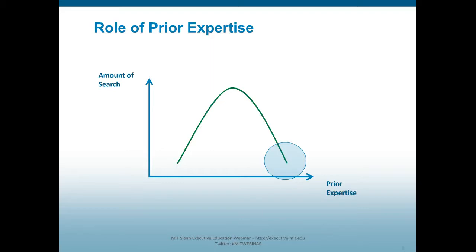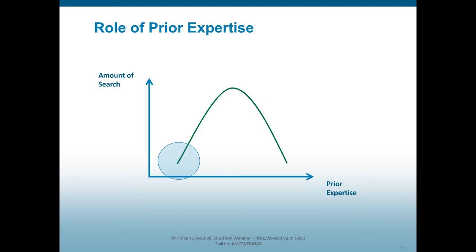Let's go to the other end of the spectrum — the people with no prior expertise. These people are clueless, and they're going to remain clueless because they're not searching. Why don't these people search? You'd think they have the greatest need for information and should be most motivated to do some search. Well, the answer is they don't have enough expertise to know which questions to ask, where to go to get the information, or how to interpret it when it comes in. Some time ago, before I married, I had a call from a friend one Saturday morning and she wanted to go and buy a new bicycle. She knew nothing about bicycles.